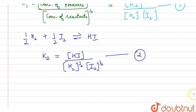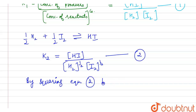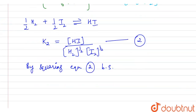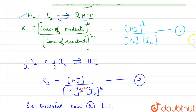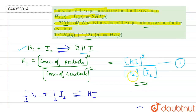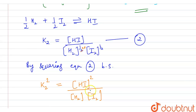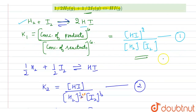Now if we square equation 2 on both sides, we get K₂² = [HI]² / ([H₂]^(½×2) × [I₂]^(½×2)) = [HI]² / ([H₂][I₂]). This is essentially equal to K₁, since K₁ = [HI]² / ([H₂][I₂]). So K₂² = K₁.